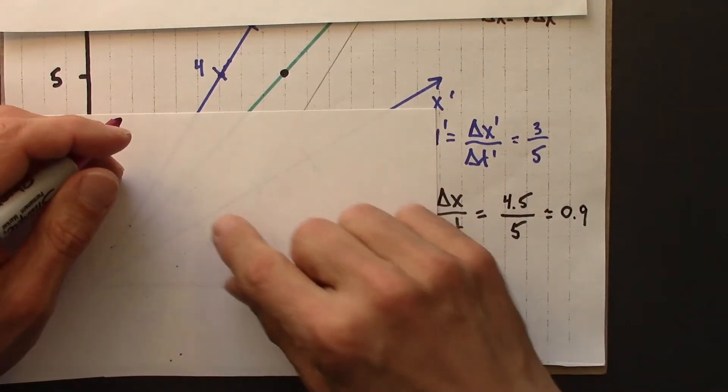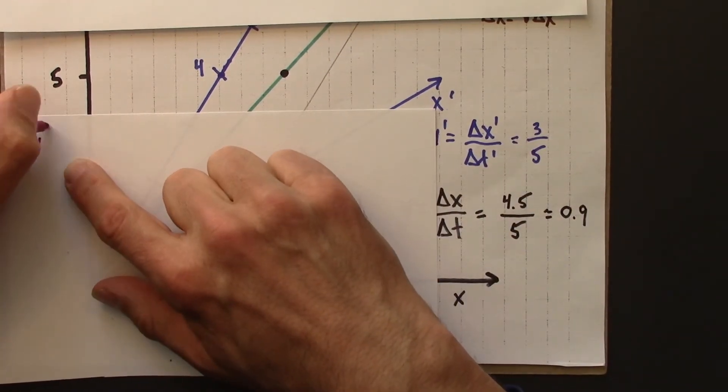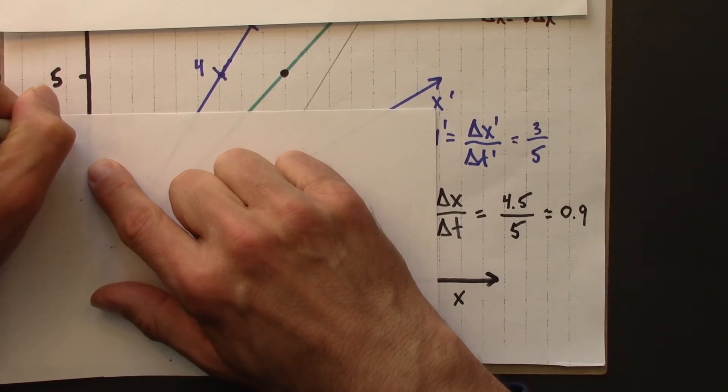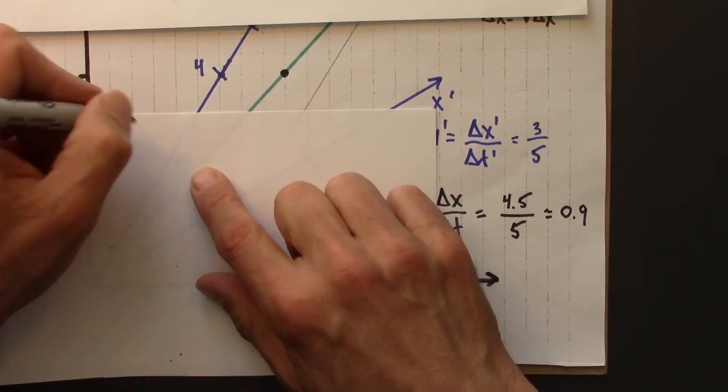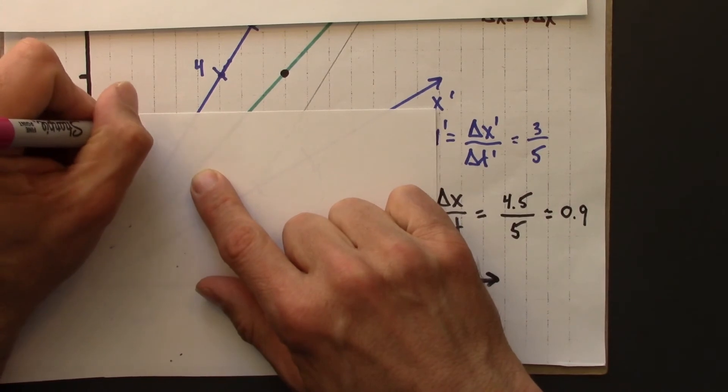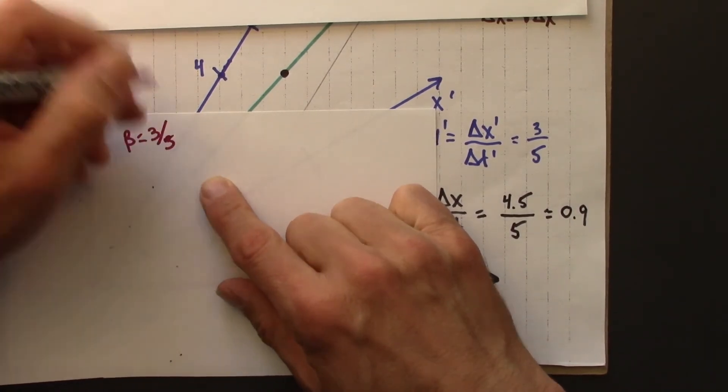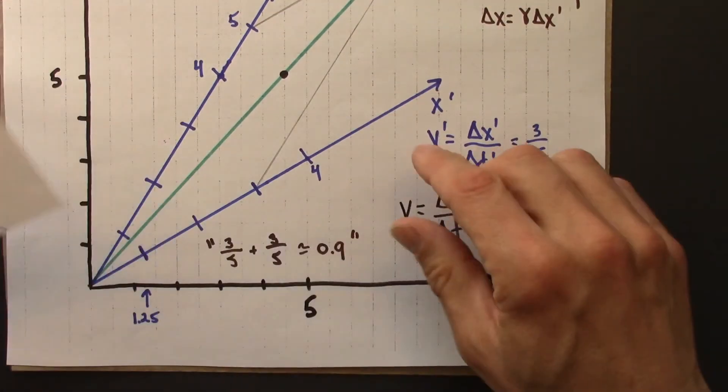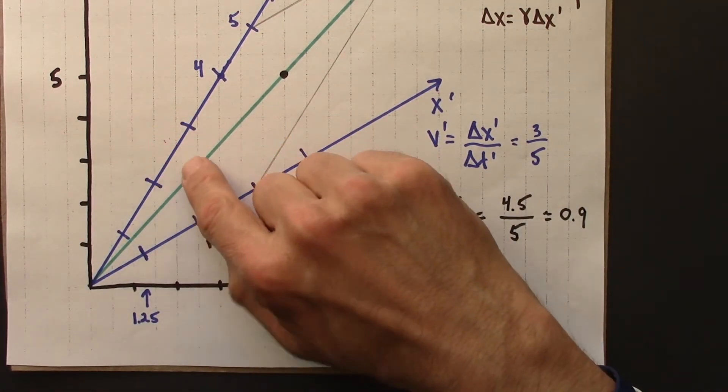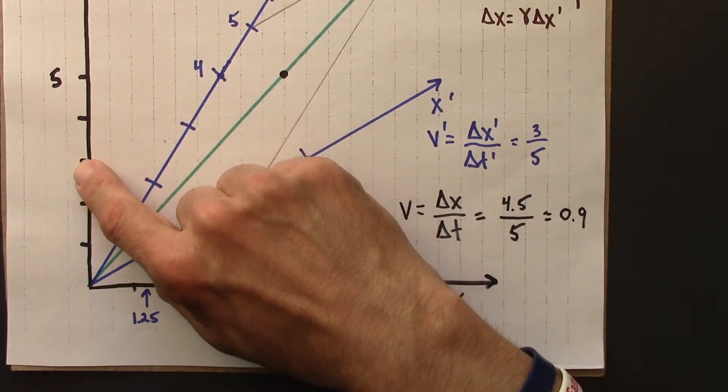I'm going to use a different color than my fading black pen. So let's do this. So we know that v prime, suppose we know that v prime is 3 fifths. And beta is 3 fifths. So that's the scenario that we had here.